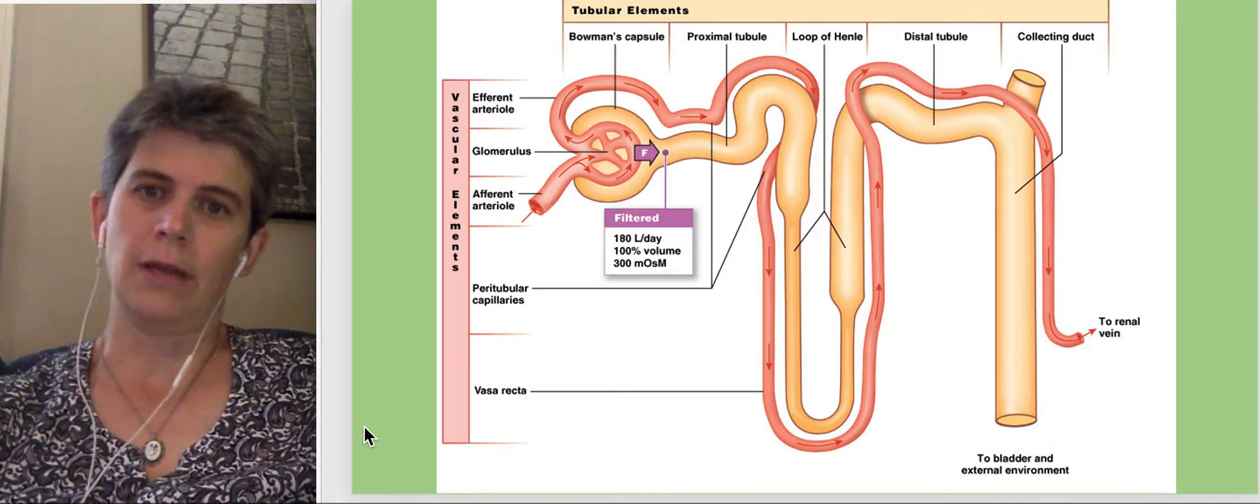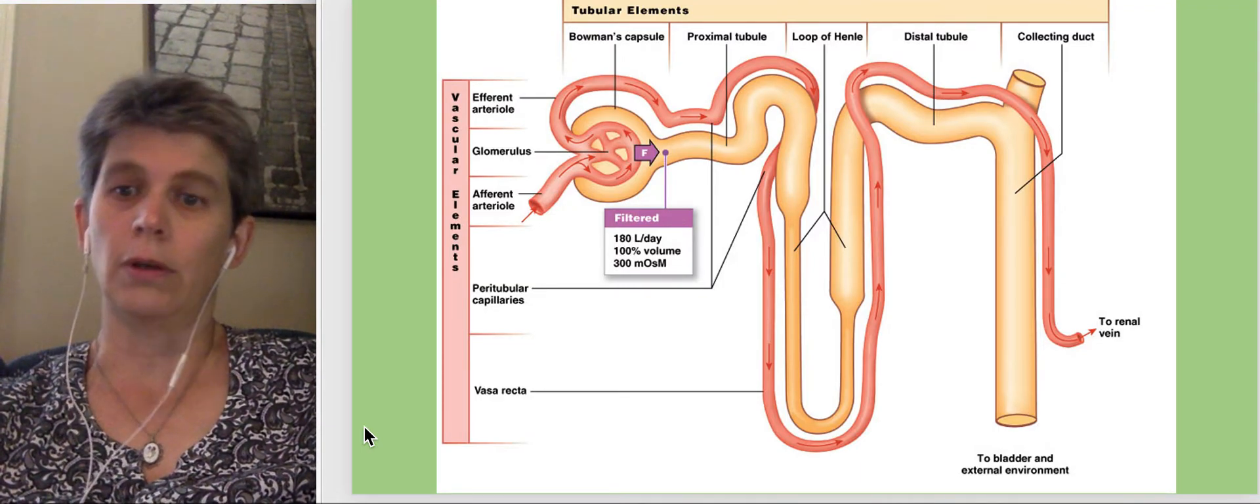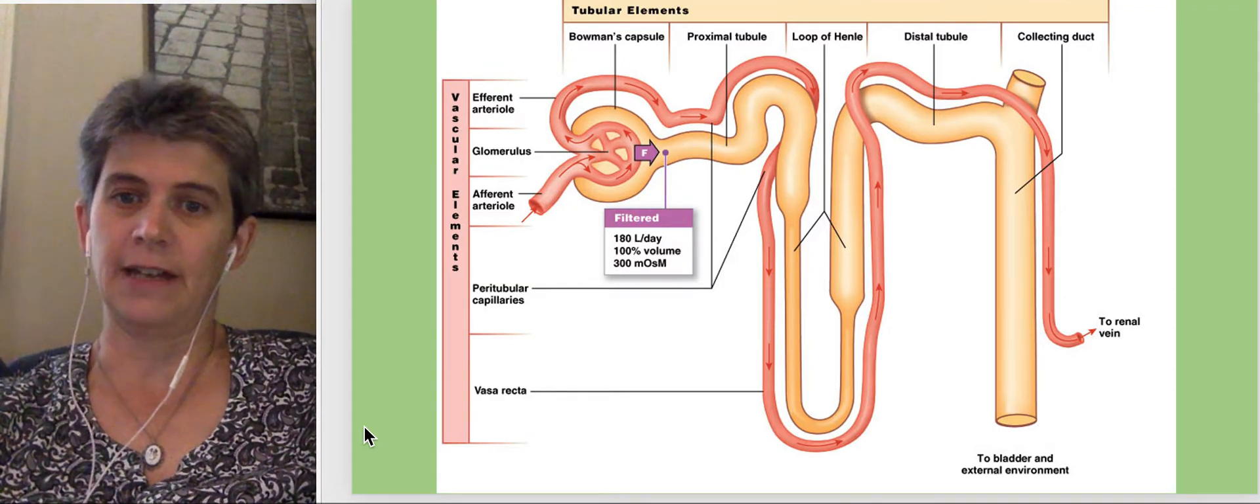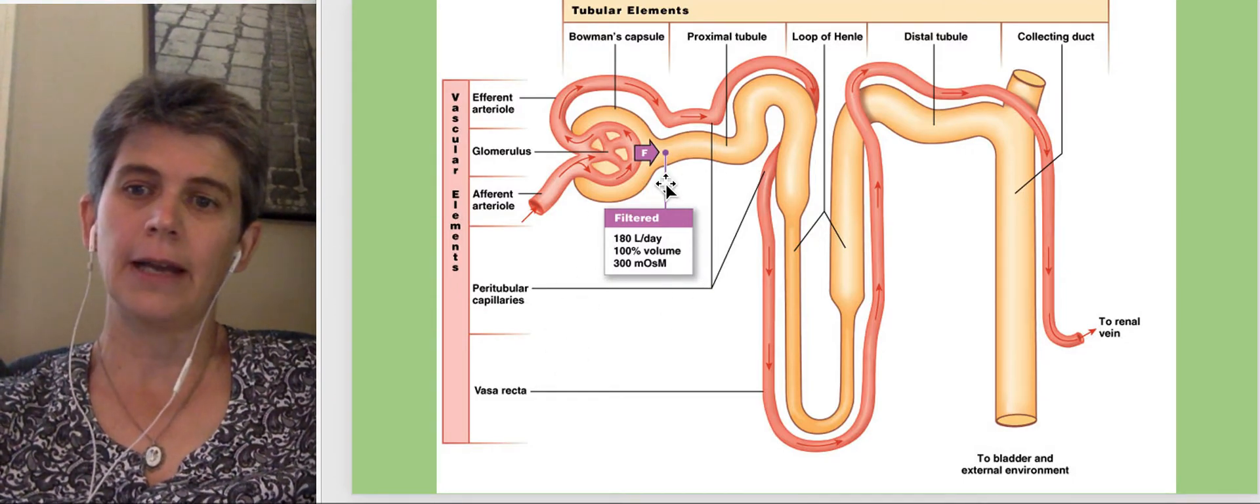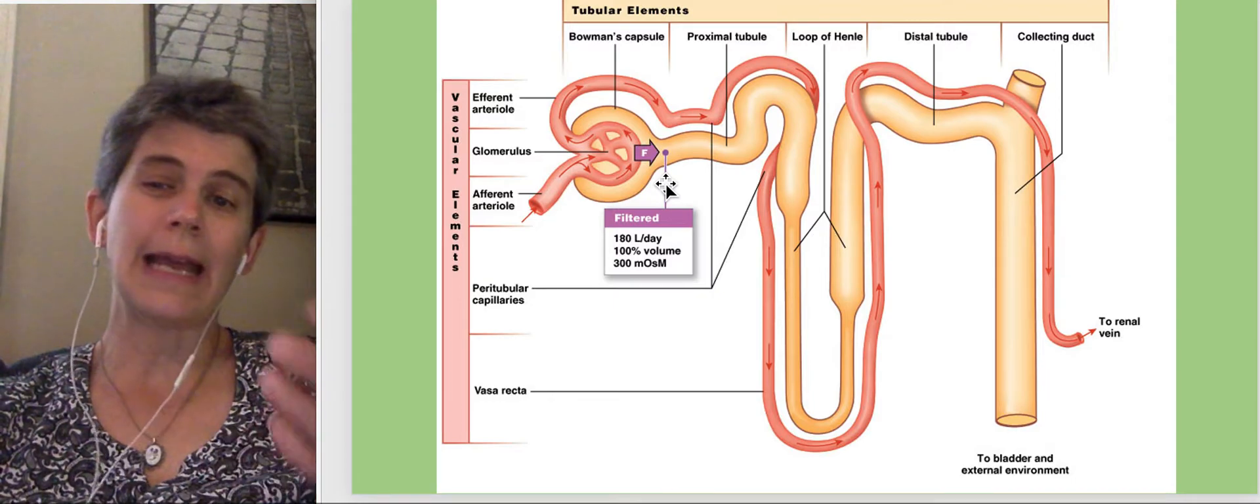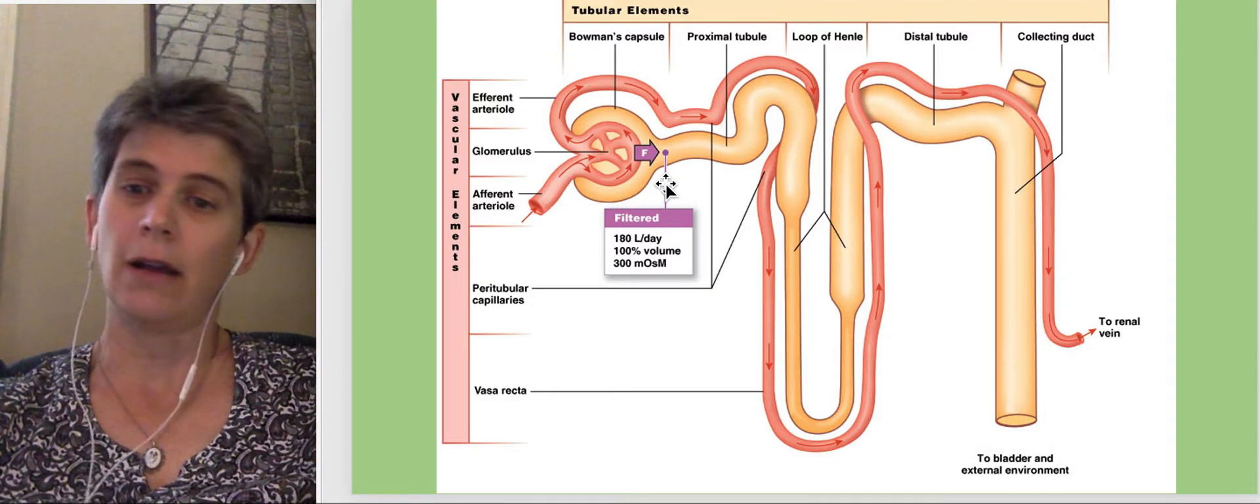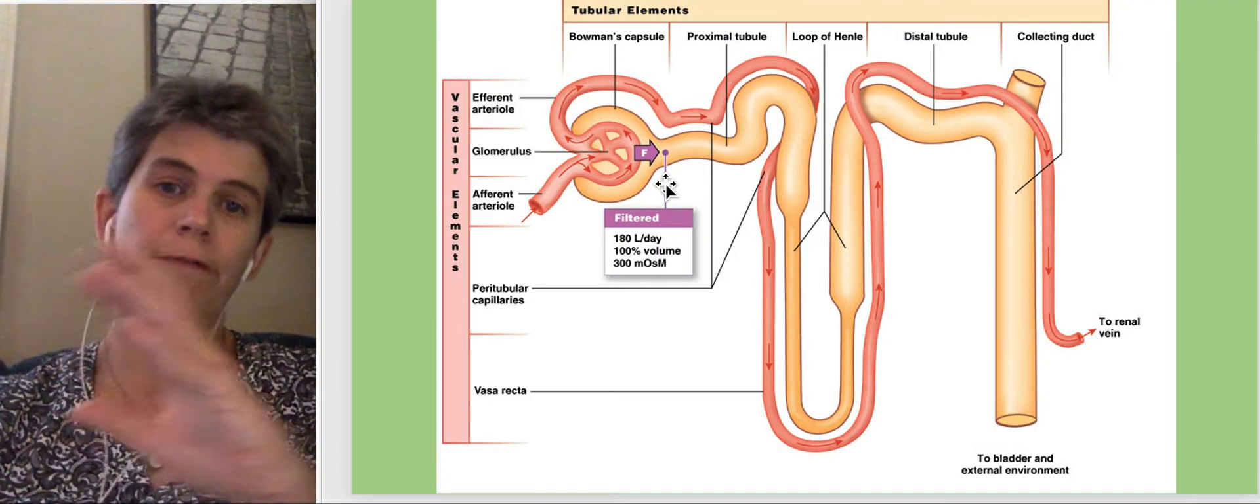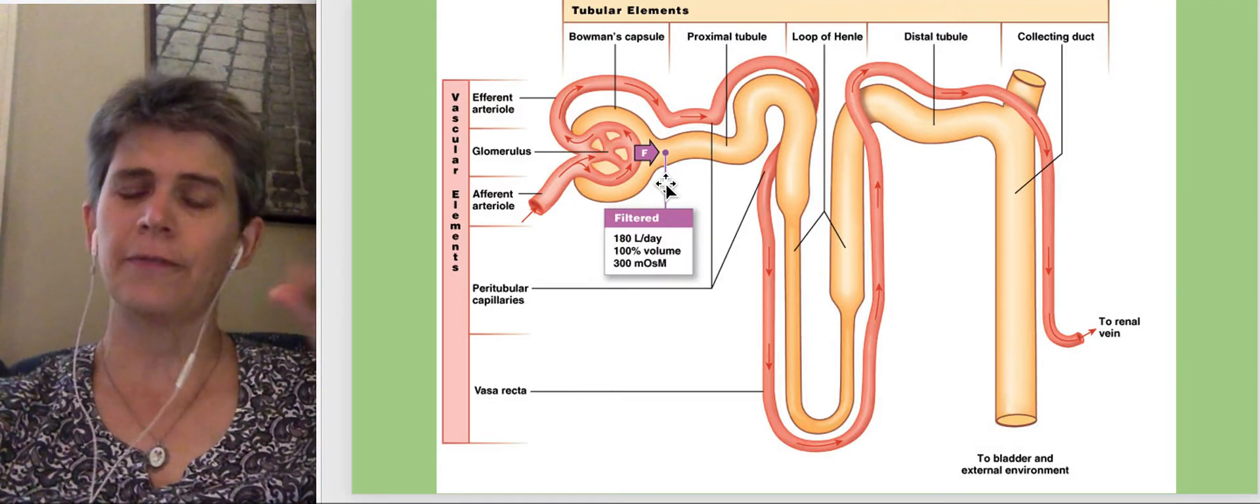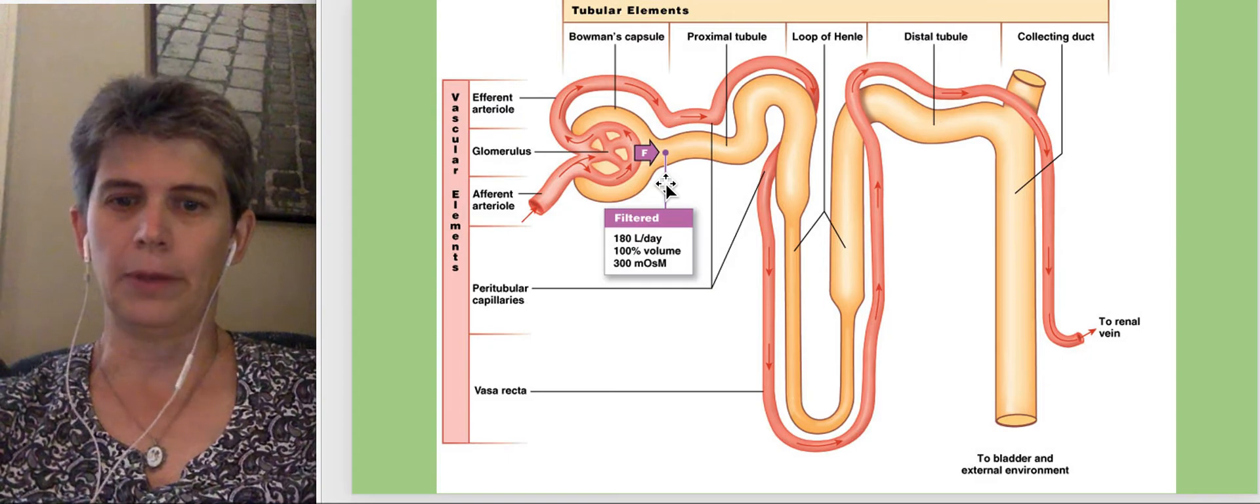Let's start with the Bowman's capsule or glomerular capsule as it's now more commonly called. As you can see on the label on this slide, more than 180 liters per day of fluid, blood plasma, are pushed or filtered into the nephron tube from the blood.